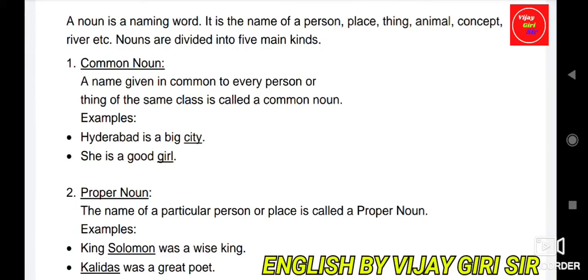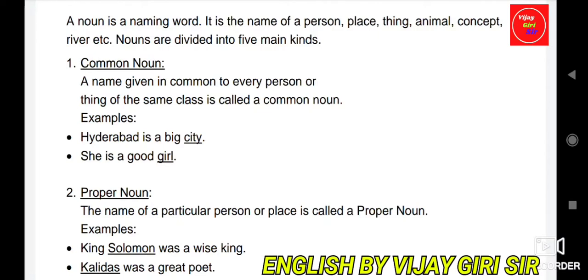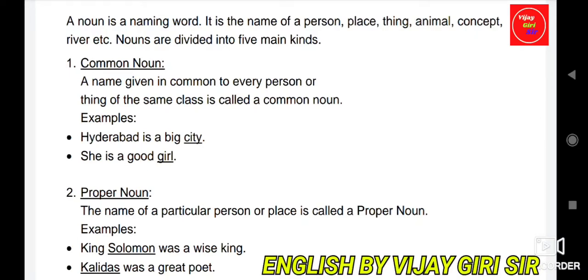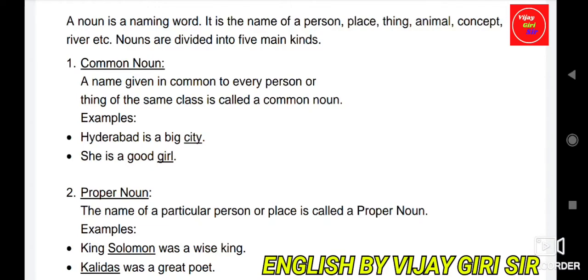First is common noun. A name given in common to every person or thing of the same class is called a common noun. For example, 'Hyderabad is a big city.' Now, city can be any city — it can be Mumbai, Hyderabad, Kanpur, Lucknow, Nagpur, Jaipur. Any city can be there. City is a common noun.